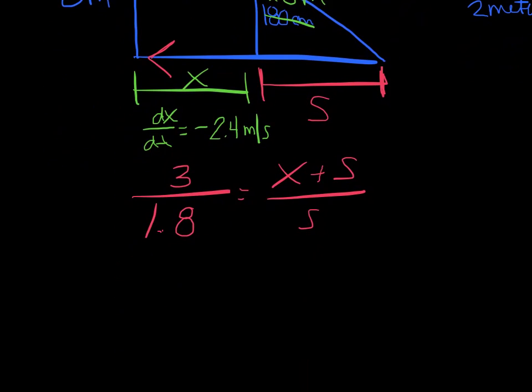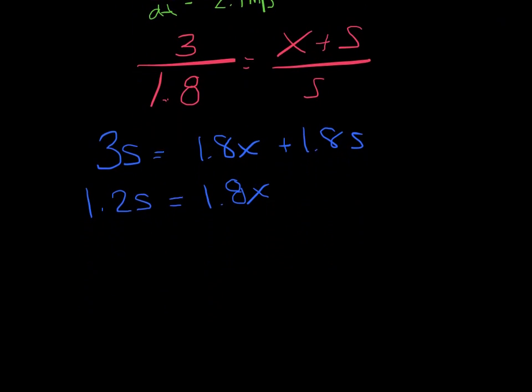Alright, so again, I'm going to cross multiply and solve, so I have to avoid quotient rule if I can. So I've got 3s equals 1.8x plus 1.8s. And again, I want ds/dt. 1.2s equals 1.8x. So s equals 3/2 x.